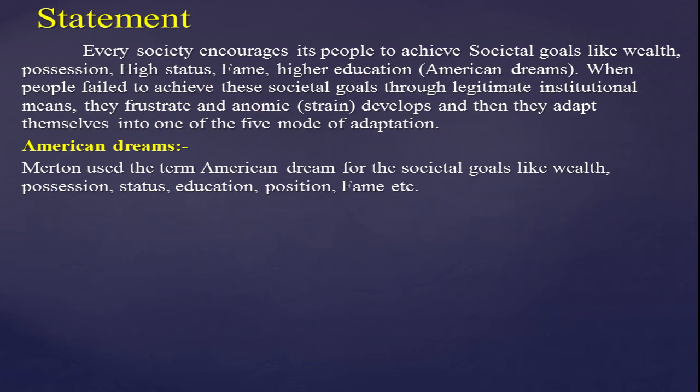Robert Merton's theory has been named in connection with the American dream — like wealth, possession, high status, fame, and higher education. These were the American dreams of the people. The first statement is that every society encourages its people to achieve these American dreams. When people fail to achieve these societal goals, they become frustrated and anomie develops, and they adopt themselves into one of the five modes of adaptation.